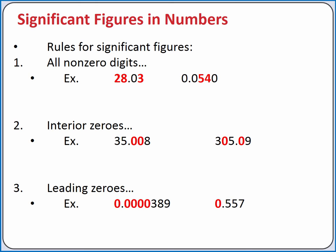So in the number 35.008, there are five significant figures. And in the number 305.09, we also have five significant figures.